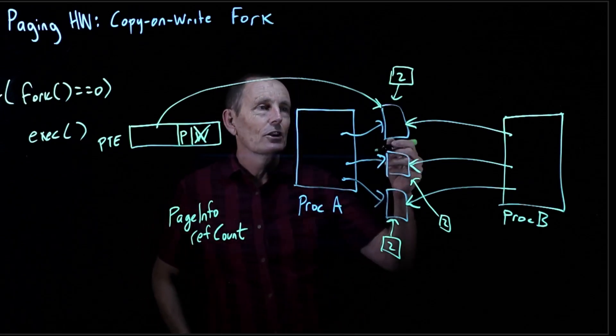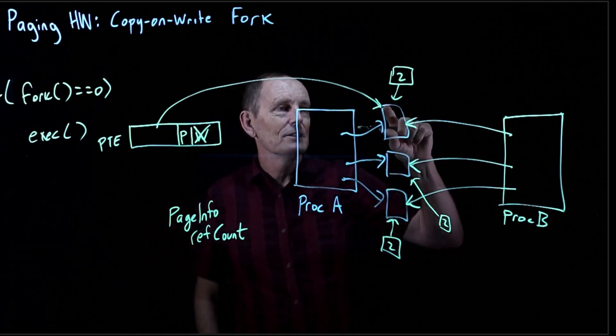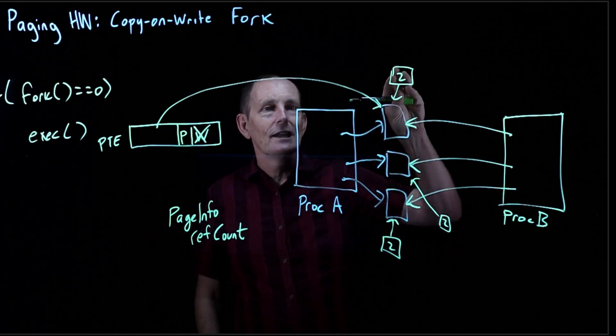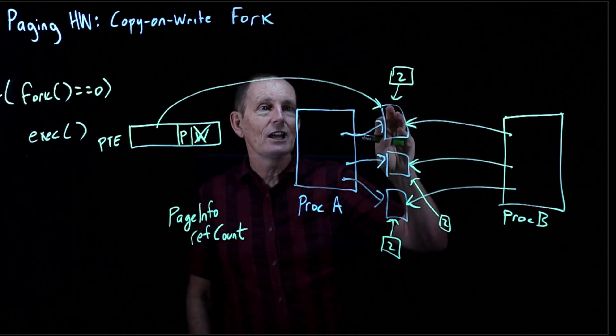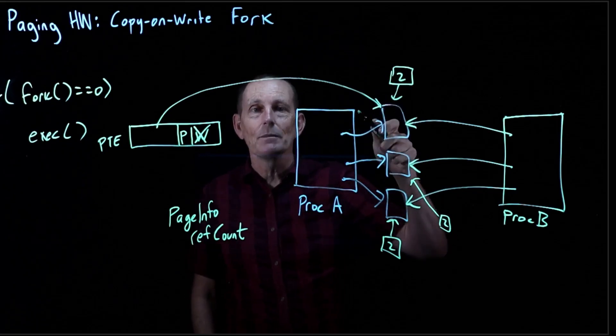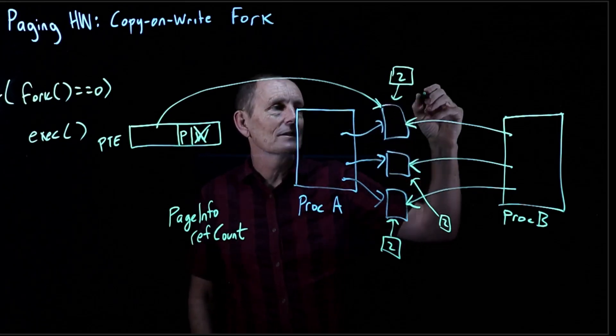The kernel would say, okay, this is supposed to be writable, but it's not. It has a reference count of 2, so therefore this page is shared with other processes. I better make a copy now. So it makes a copy.